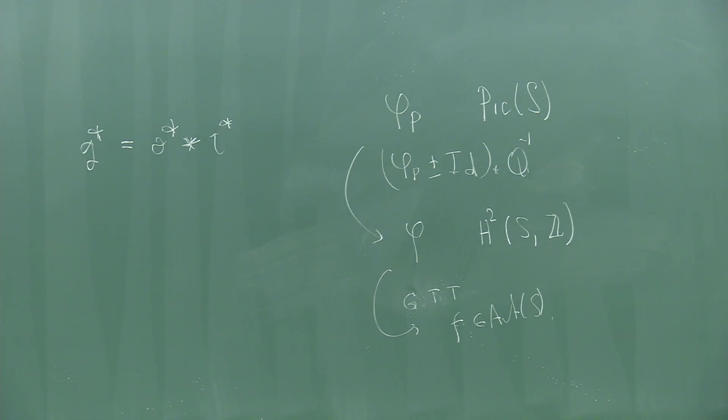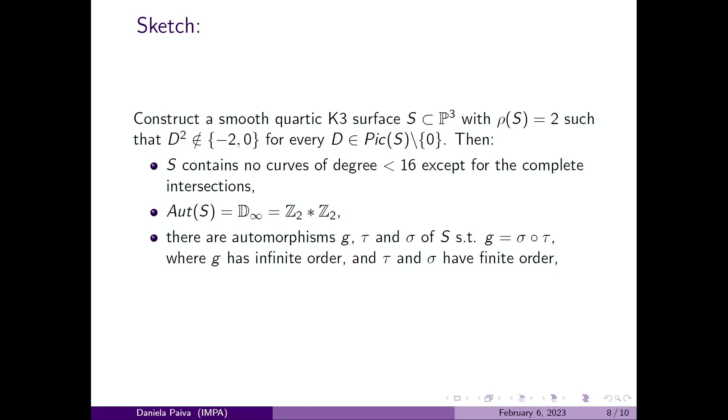Since g has infinite order, by Ogizo's theorem it is not induced by a Cremona transformation. So σ or τ is not induced by a Cremona transformation, and with that we have an answer to Ogizo's question. But in fact, we prove that they are not induced by a Cremona transformation, and also we prove that they are the generators of the automorphism group for this representation. So we can prove that the same happens for all the elements of the automorphism group, and we prove the theorem.